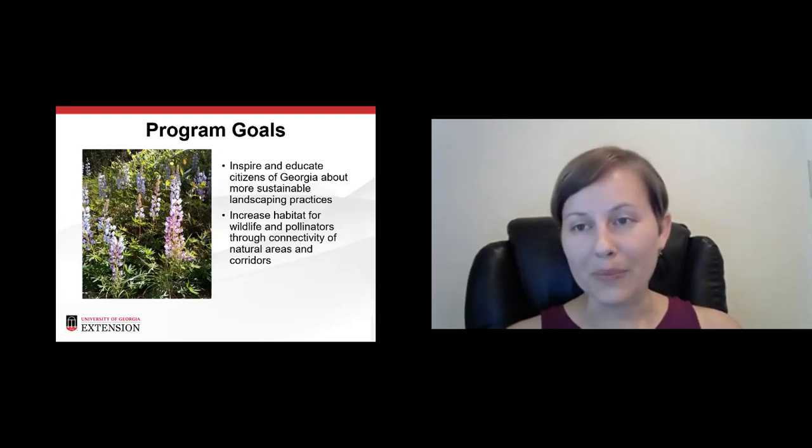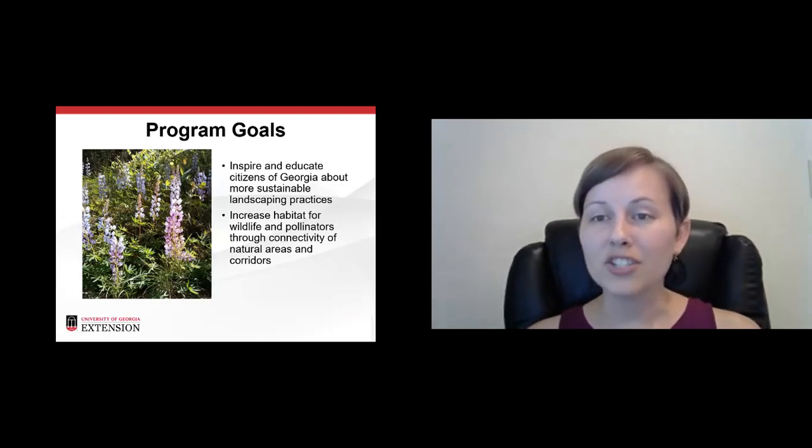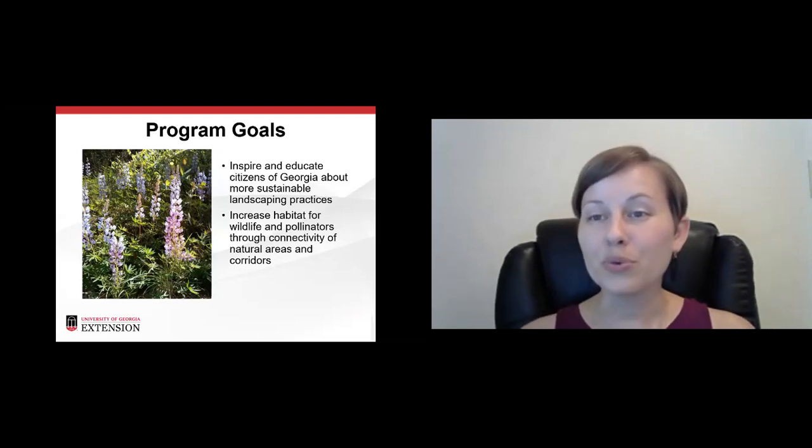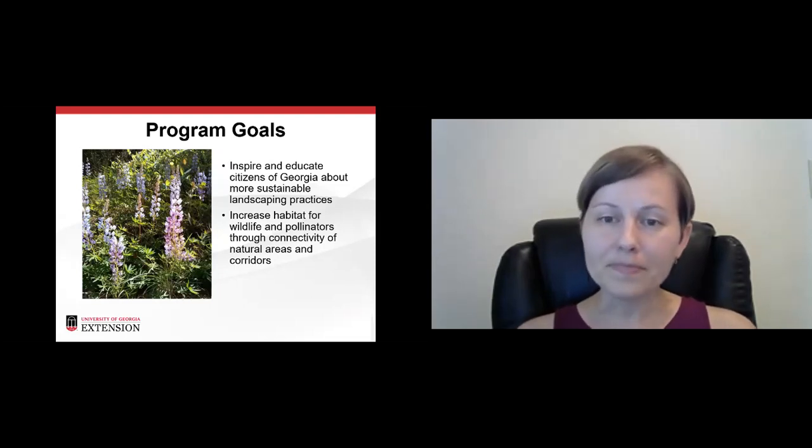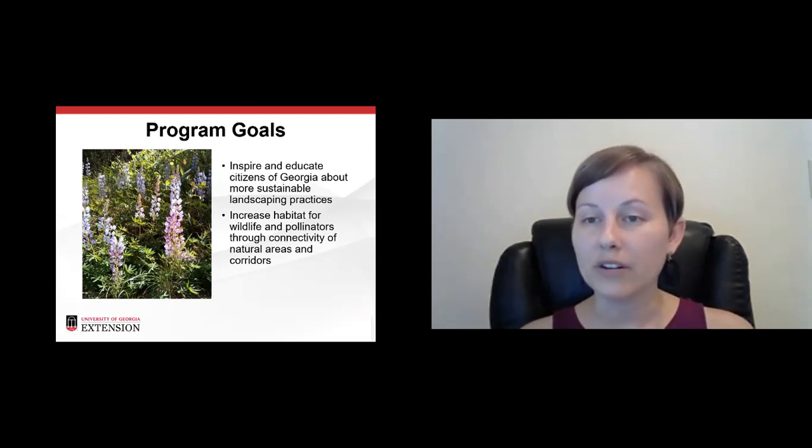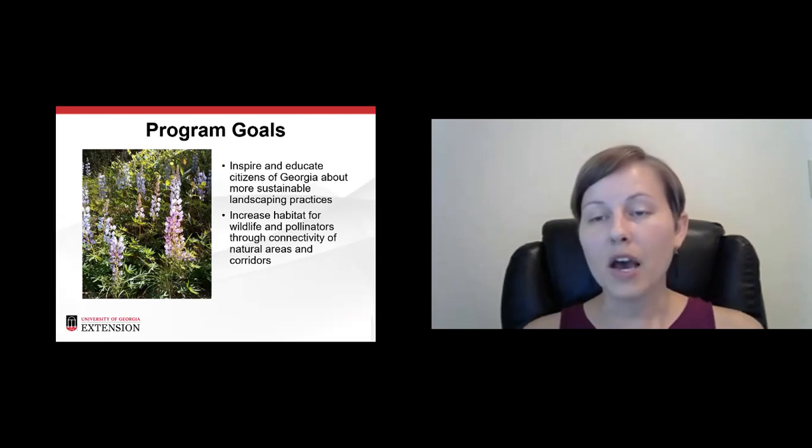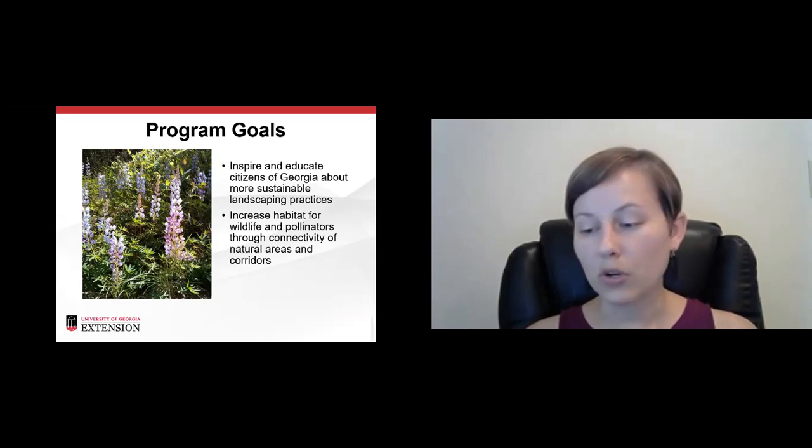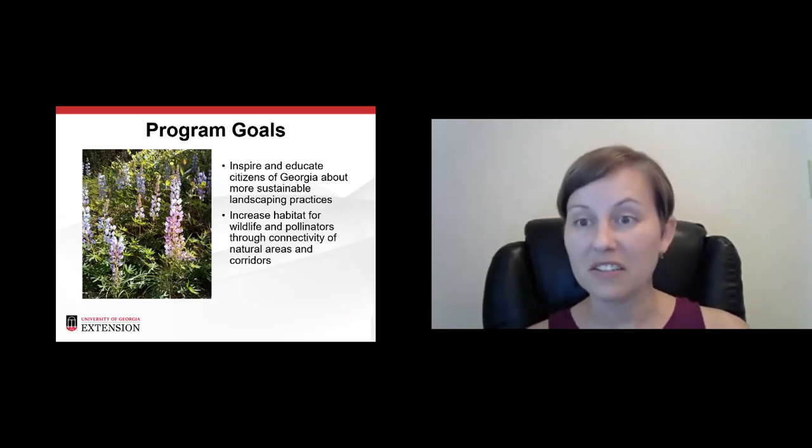But also the impacts they can have if you're not doing positive things. So the goals of our program, first is to inspire and educate. We want to educate citizens of Georgia about more sustainable landscaping practices. Through doing this, we're hoping to increase habitat for wildlife and pollinators. And through creating more habitat for wildlife and pollinators, create connectivity. Create connectivity between landscapes, between natural areas, creating corridors for wildlife. We all, things are so divided up now. We have such a developed landscape that it really has an ecosystem effect. And connectivity is really important in order to sustain those ecosystems, which we're dependent on to live and to survive as a species.